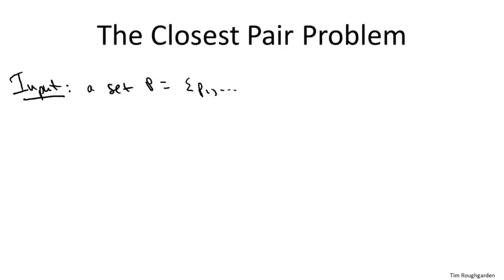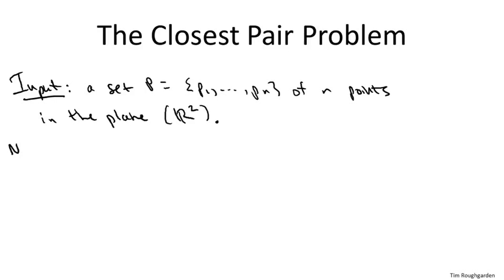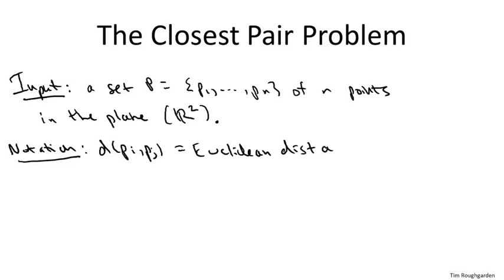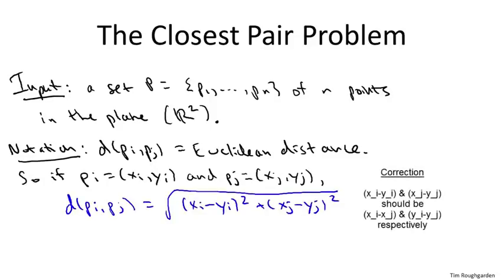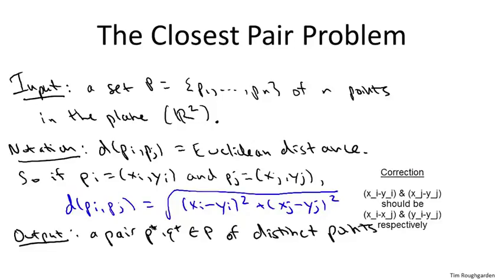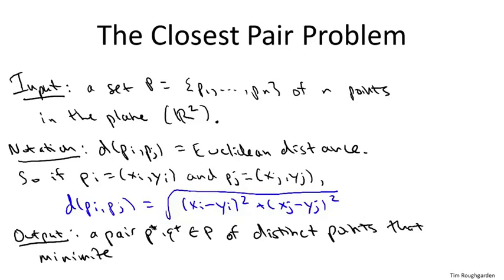Let's begin by defining the problem formally. We're given n points in the plane, each defined by its x-coordinate and its y-coordinate. When we talk about the distance between two points in this problem, we're going to focus on Euclidean distance. We'll denote the Euclidean distance between two points Pi and Pj by D of Pi, Pj — which is the square root of the sum of squared differences in each coordinate. The goal is to identify among all pairs of points the pair which has the smallest distance between them.